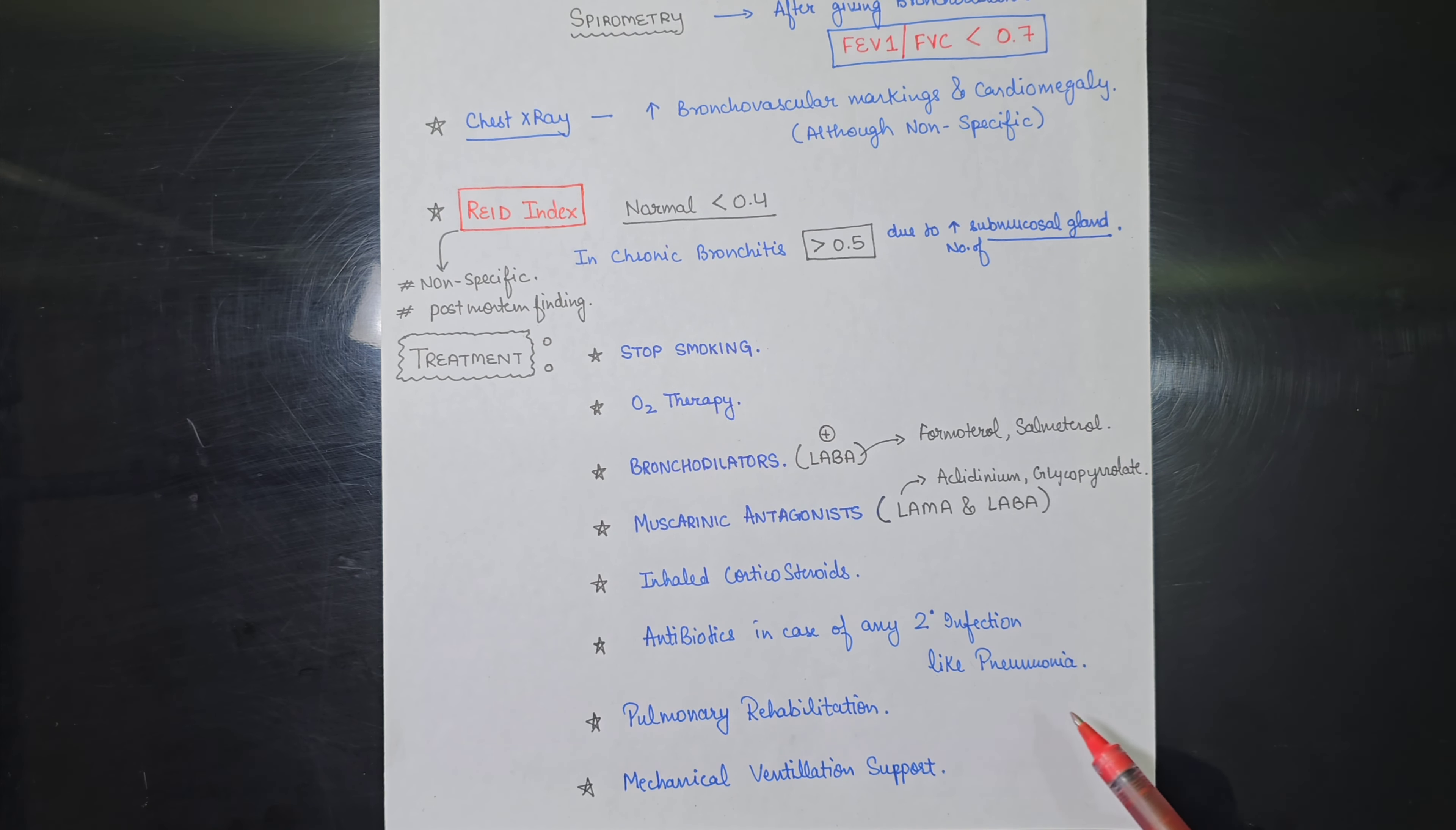Antibiotics are also given in case of any secondary infection, if the patient is having any kind of secondary infection like pneumonia. And pulmonary rehabilitation is always there for the chronic stages of the patient, if the patient is having chronic bronchitis from the past 10-15 years. Also, mechanical ventilation support is also given to the chronic bronchitis patient.